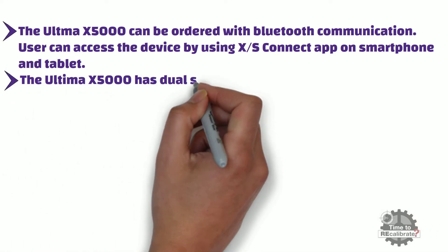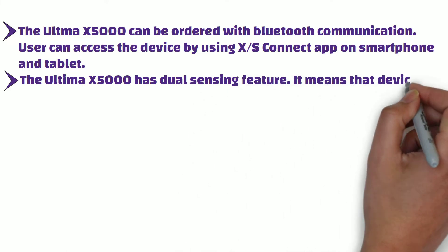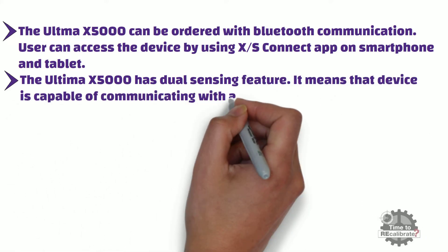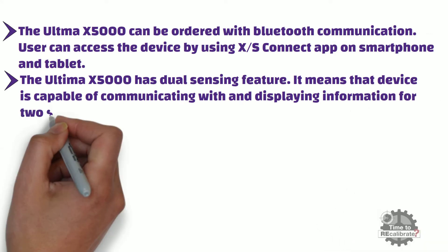The Ultima X5000 has dual sensing feature. It means that the device is capable of communicating with and displaying information for two sensors at a time.